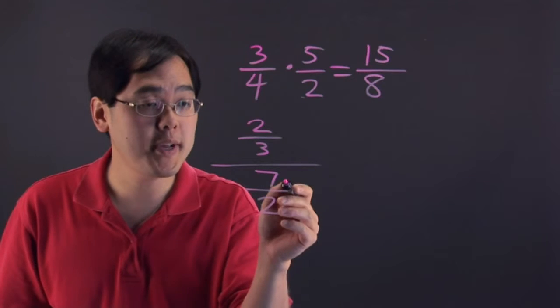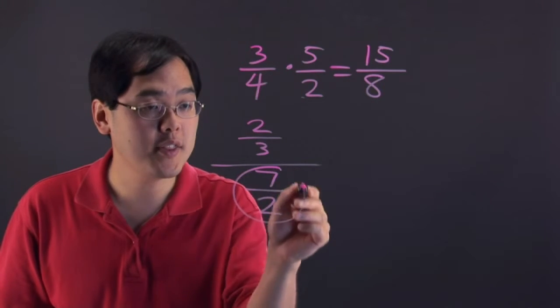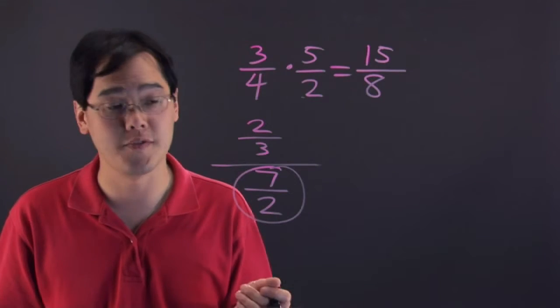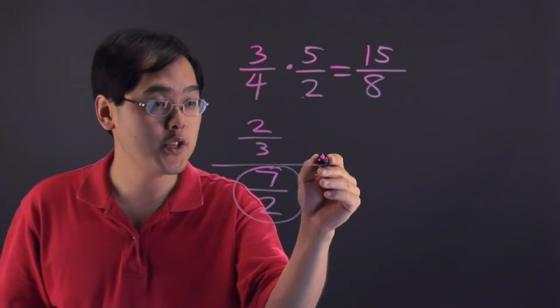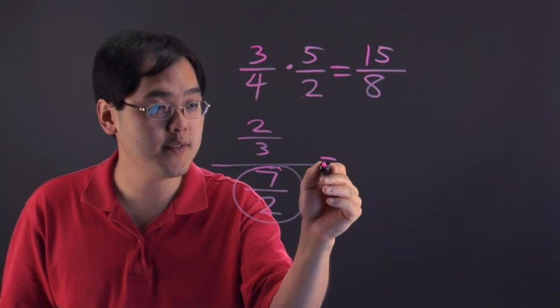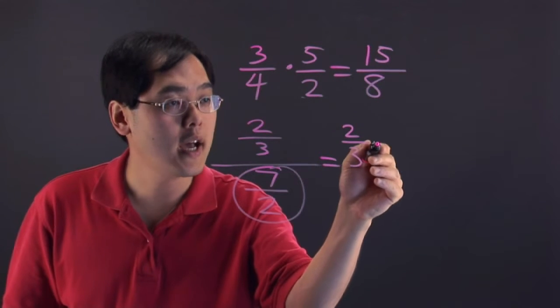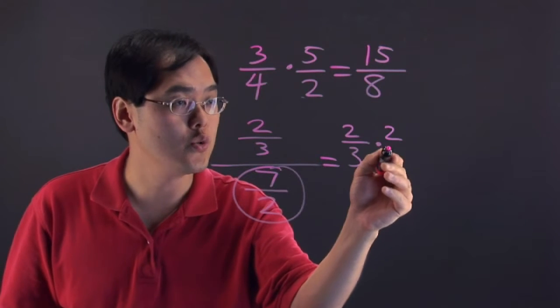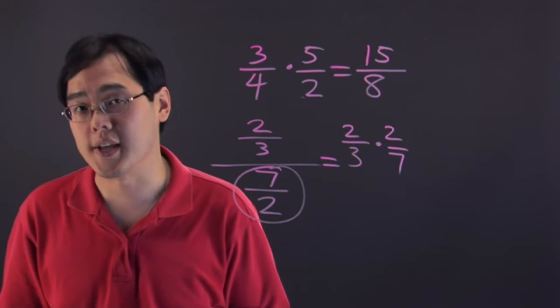Because when you divide by 7/2, you have to take the denominator and you have to find the reciprocal, or flip the fraction if you will, and then go from there. So 2/3 divided by 7/2 is actually another way of saying 2/3 times the reciprocal of 7/2, which is 2/7.